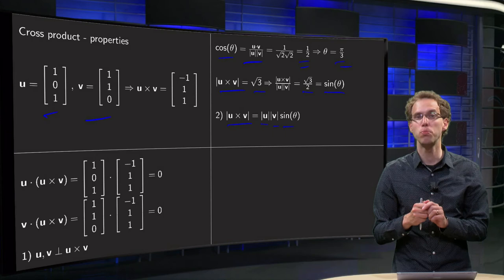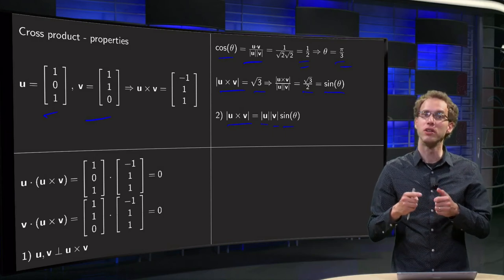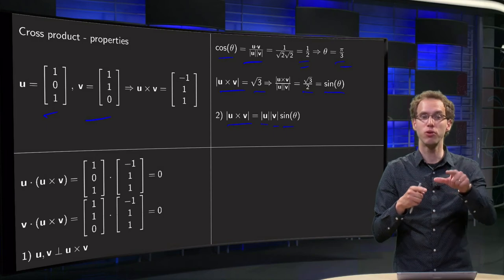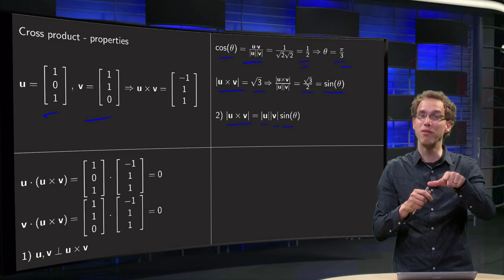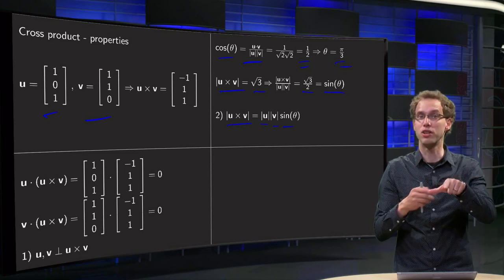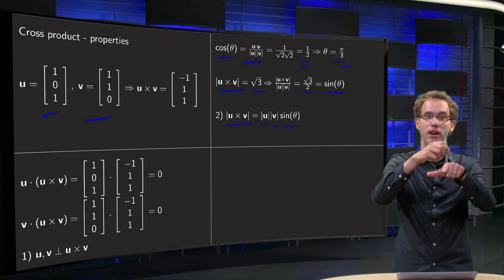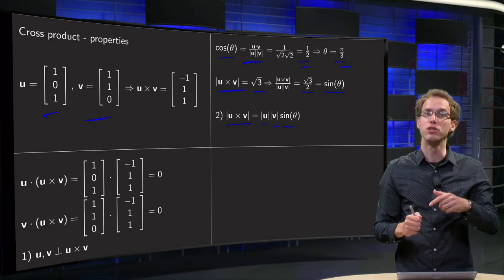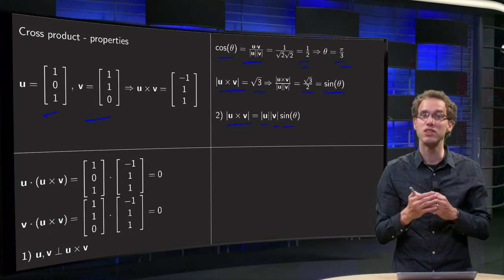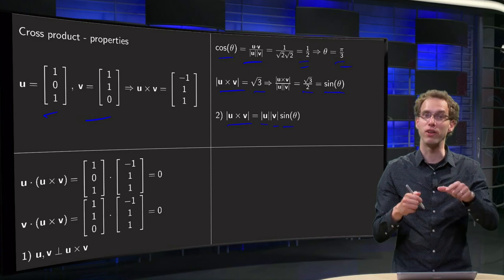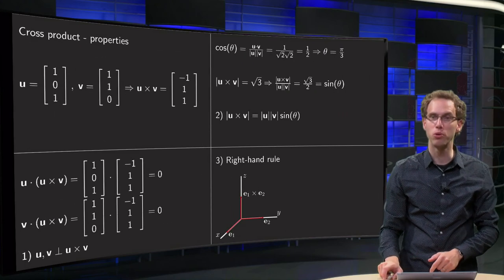And do those two properties fix your cross product? Well, let's see. We know that your cross product has to be orthogonal to u and v. So if you have u and v, your cross product has to be orthogonal to that. And we know its length. It's given in terms of u and v and the sine of the angle. But then still, your cross product could be either over here or over there. So those first two properties almost fix your cross product, but you need a third one. Is the cross product up or down?